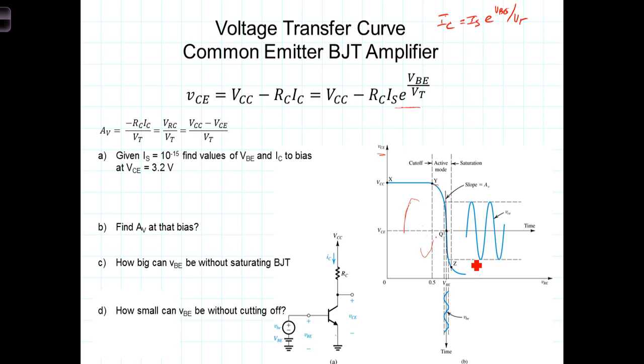The slope of that is the gain of the amplifier. As we saw in the previous video, the derivative of this with respect to VBE gives us that the gain is equal to negative R sub C, the collector resistance value, times I sub C, the bias collector current, divided by the thermal voltage. We can write it in a number of different forms that are useful, depending upon what we know.